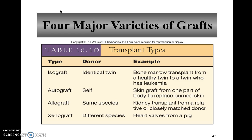With that said, let's talk about the different kinds of transplants. There are four basic kinds. The first is an isograft, where the donor and the recipient are identical twins. Obviously, you would need to have an identical twin for this to work.